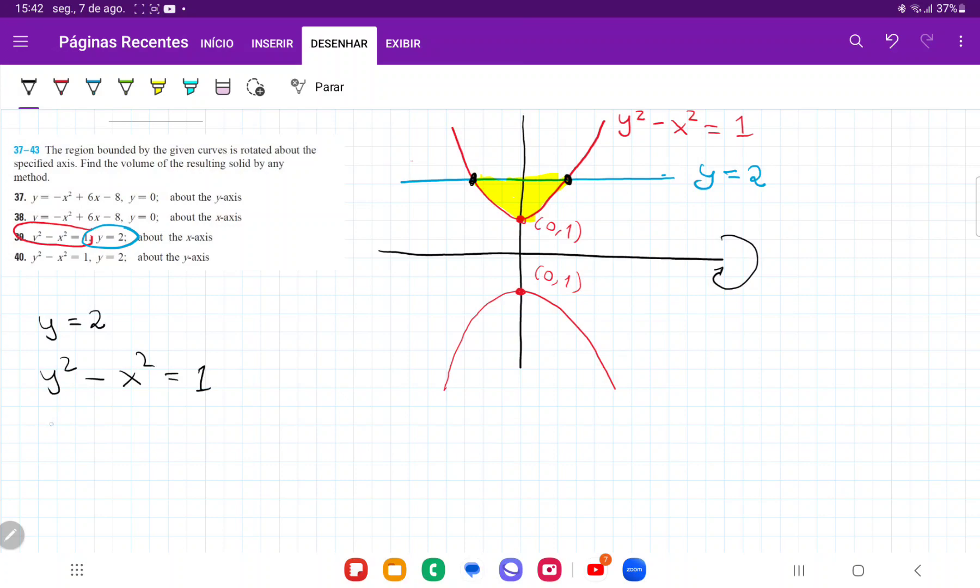I'm going to plug in 2 here, so then I'm going to have 2 squared minus x squared is equal to 1. Therefore, I'm going to have 4 minus 1 is equal to x squared. And so x is equal to plus or minus square root of 3. And so this is on my x-axis here.